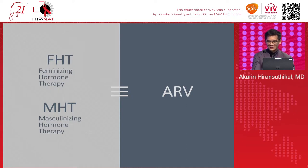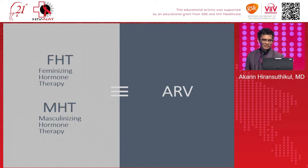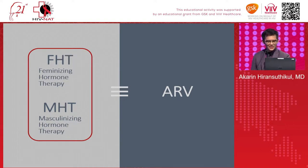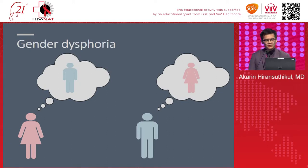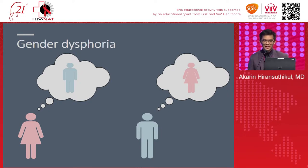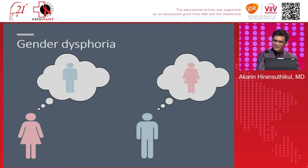Today I'll talk about Gender Affirmative Hormone Therapy interactions with ARV. First, a little background on GA-HT. We need to understand why GA-HT is used, and the term for that is gender dysphoria. Gender dysphoria is discomfort and distress caused by discrepancy between a person's gender identity and their sex assigned at birth, including associated gender role and discrepancy between primary and secondary sex characteristics.